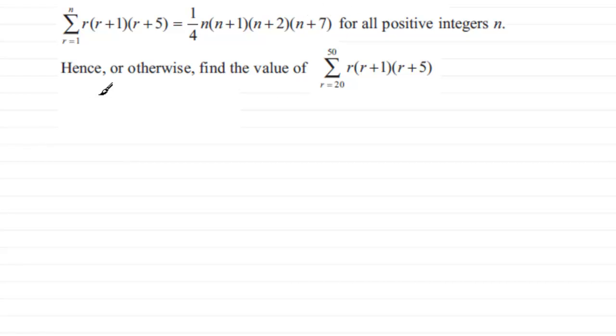In this particular part we're asked hence, so obviously this means it relies on what we just found out here, or otherwise to find the value of the sum for r going from 20 to 50 of r times r plus 1 times r plus 5.